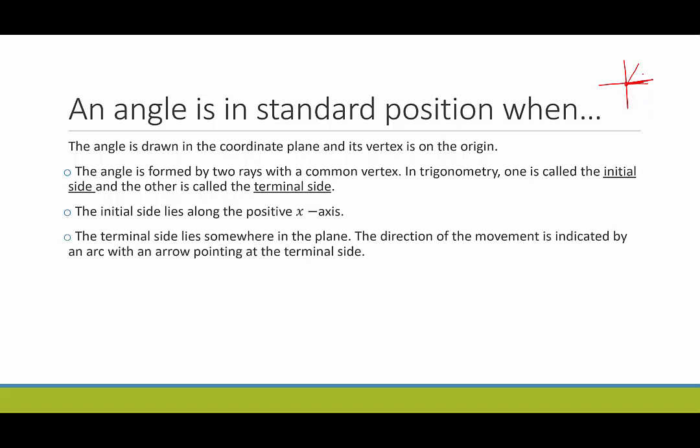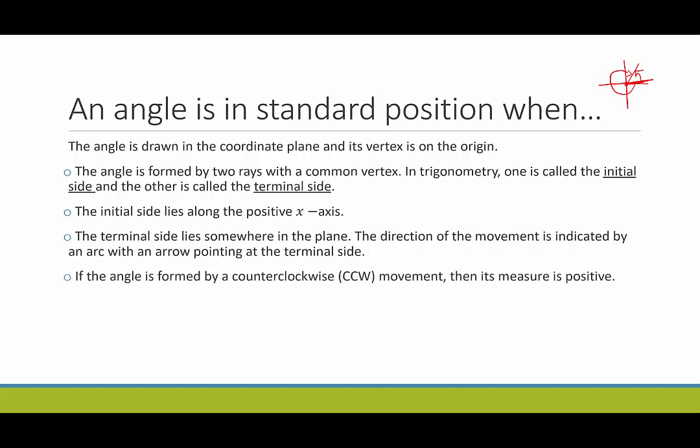The direction of the movement is indicated by an arc with an arrow pointing at the terminal side. So I could draw it like this to indicate the angle I'm talking about. I could also have an angle going the other way, if that's the one I was referring to.